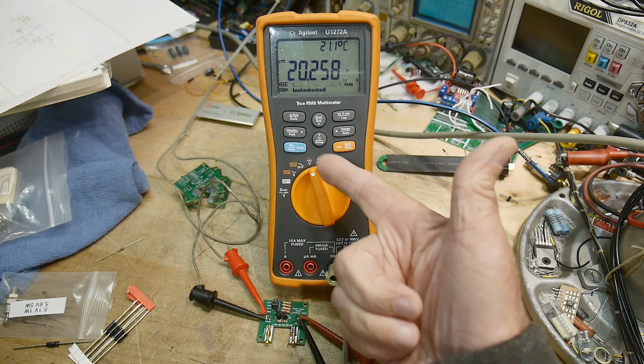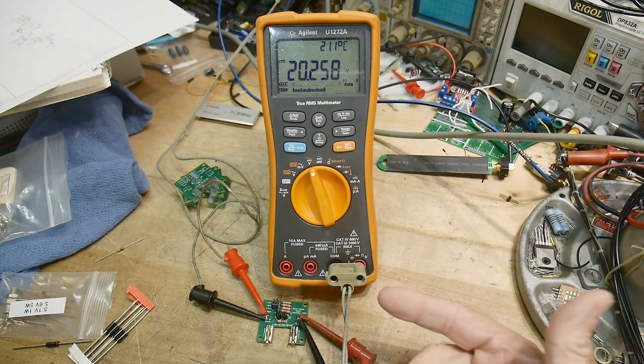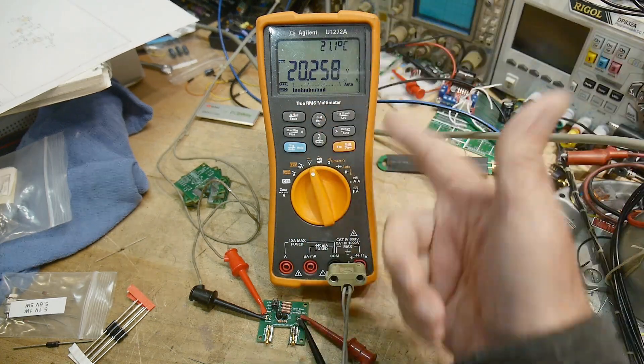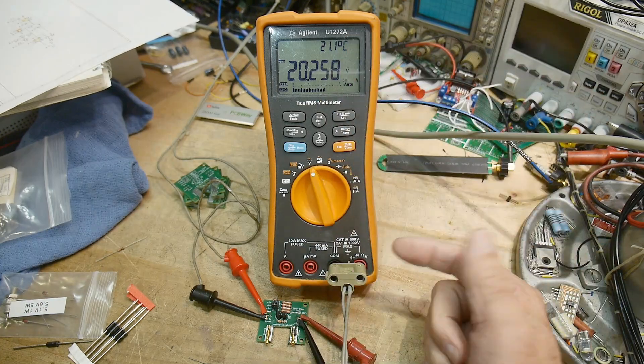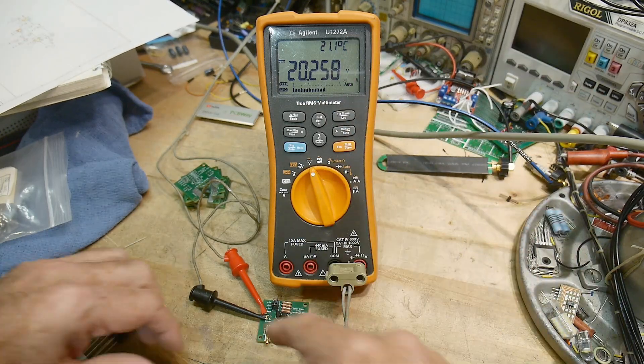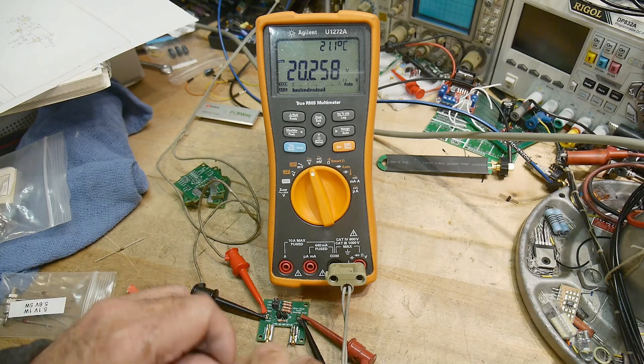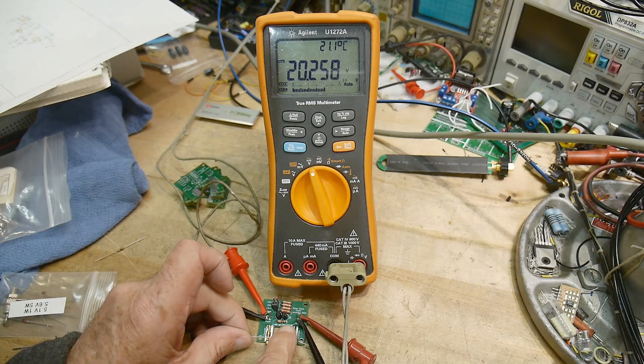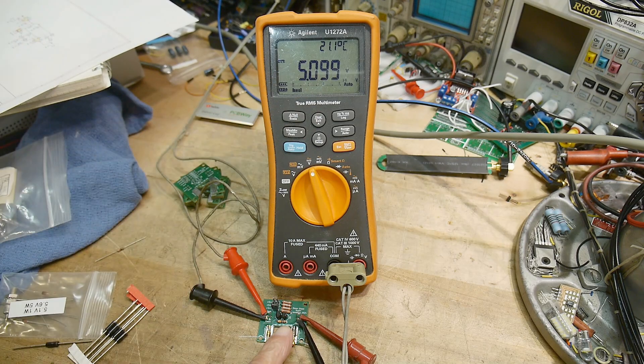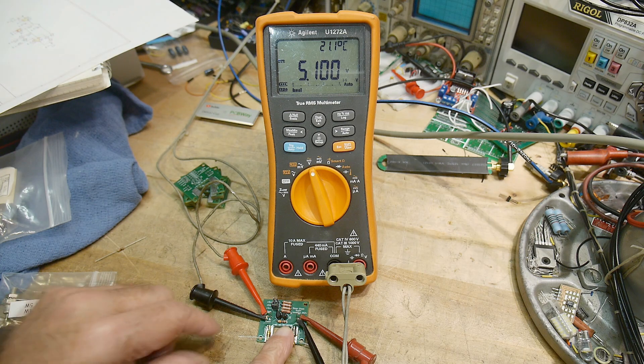All right, here we go. So I've got 20 volts coming in. So that's my compliance voltage, so I can test Zeners below 20 volts. And if I put the Zener diode on the tester and just hold it down, it's a 5.1 volt Zener diode.